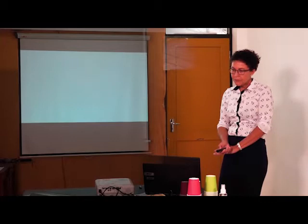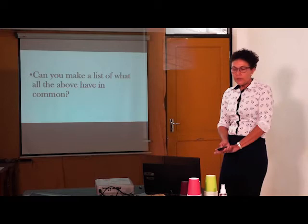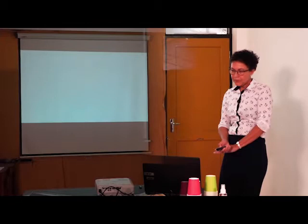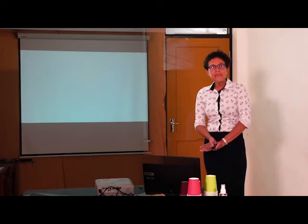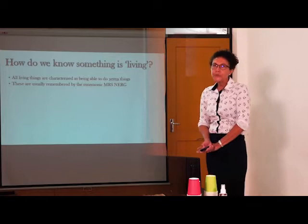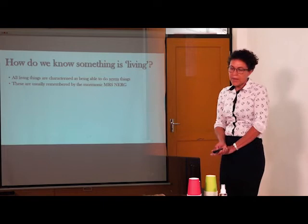Can you make a list of your own? I know that all around you there is so much, and you can exhaust the list. So how do we know something is living? All living things are characterized as being able to do seven things. These are usually remembered by the mnemonic Mrs. Nerg.